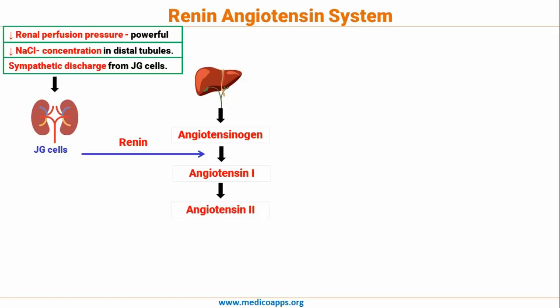Angiotensinogen is converted into angiotensin 1 with the help of renin. This angiotensin 1 again has to be converted into angiotensin 2. This process takes place in the lung, where the ACE enzyme is produced. ACE is angiotensin-converting enzyme, so ACE is produced by the lungs, and hence the conversion of angiotensin 1 to angiotensin 2 takes place in the lung.